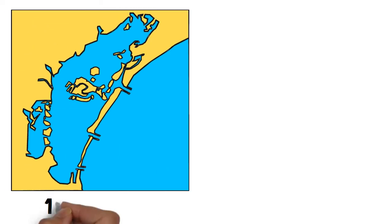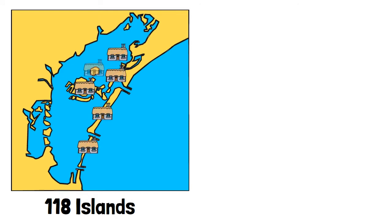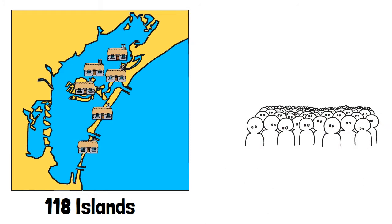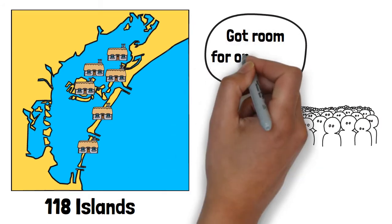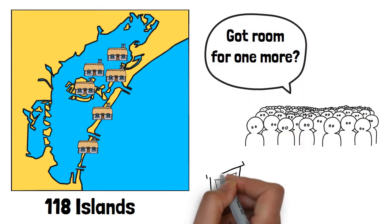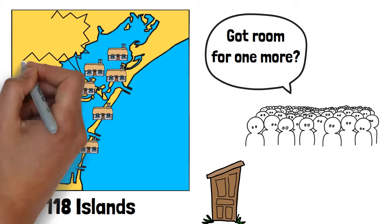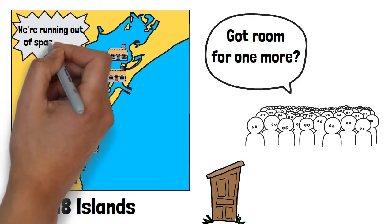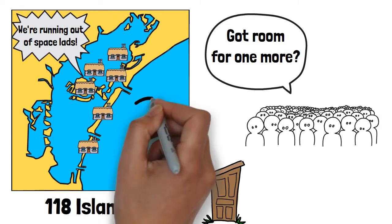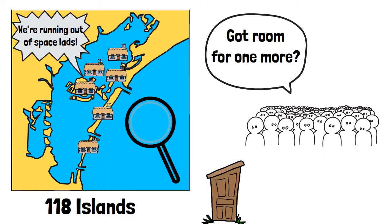With Venice consisting of 118 islands, there was plenty of room at the start for settlers to spread out and build their lives, but as the barbarians kept storming through Northern Italy, more and more people started knocking on the door to come and live in Venice. Space was drying up, and something needed to be done. They would look to the water to solve their space problem.